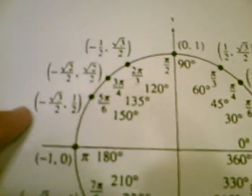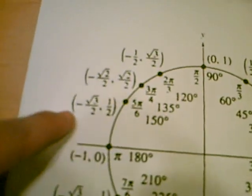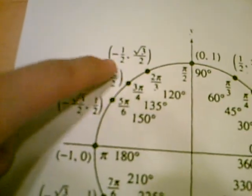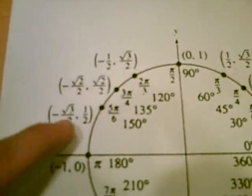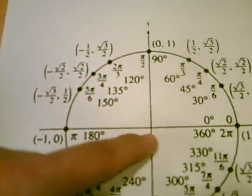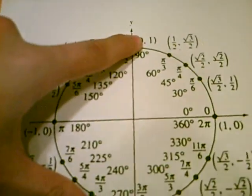Over here in the second quadrant, the x's are negative, you see, they're negative. But the y's are going to be positive here, because everything above here for y's is positive.